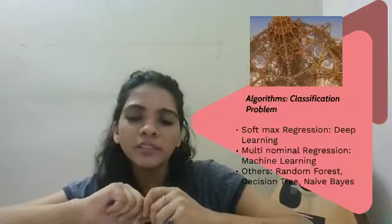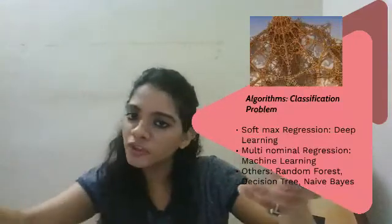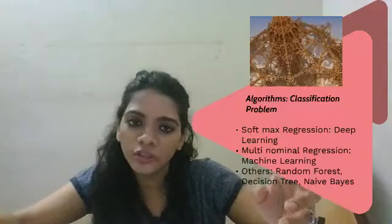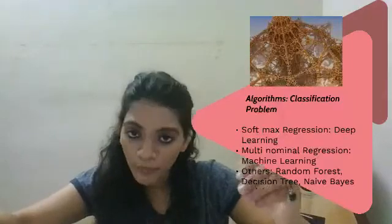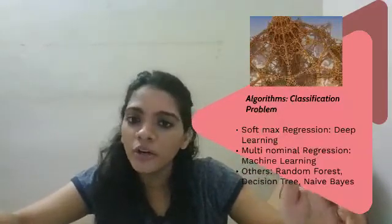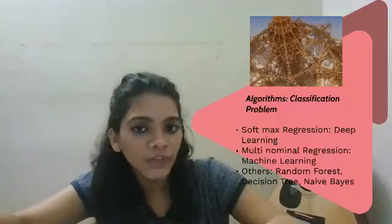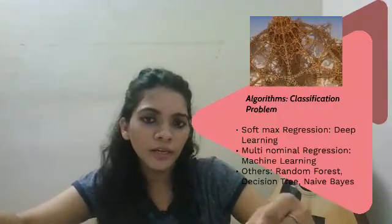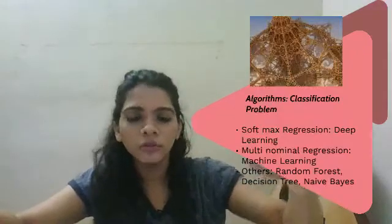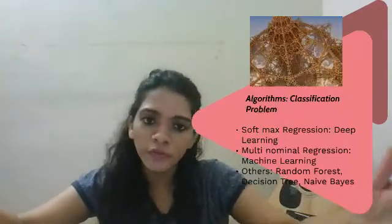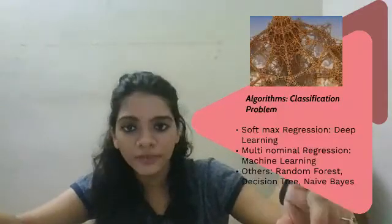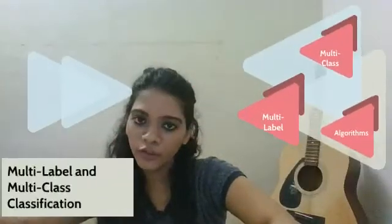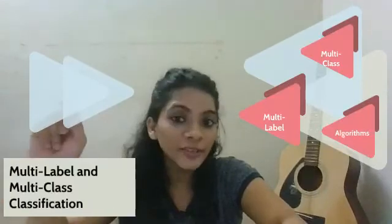One more important algorithm is softmax regression, which works well in deep learning for multi-class classification. Another is multinomial regression, used in machine learning for multi-class classification problems. If you want to narrow it down: use softmax for deep learning and multinomial regression for machine learning when dealing with multi-class classification. This brings me to the end of this video — in the next video we'll discuss Adelie in Python, so stay tuned and thanks for watching!